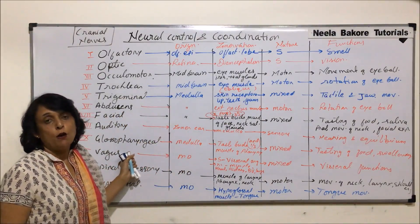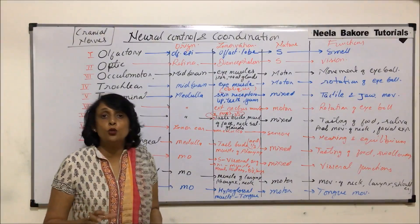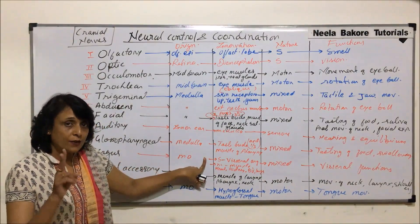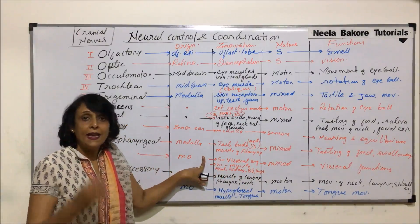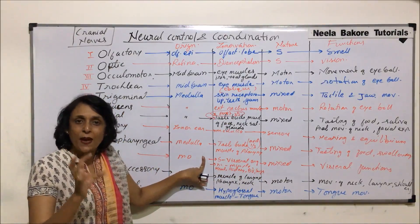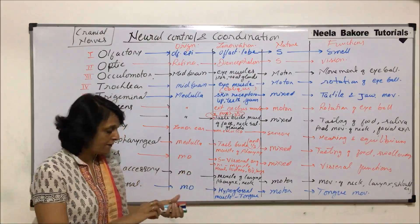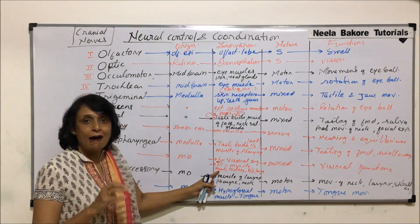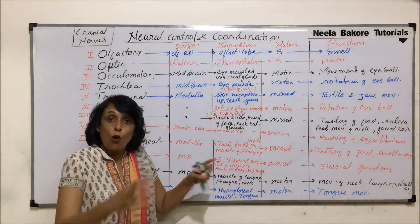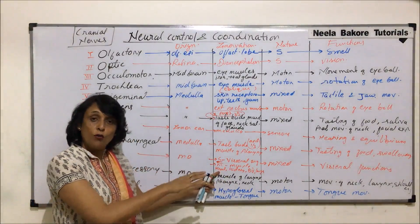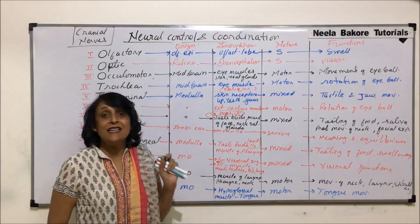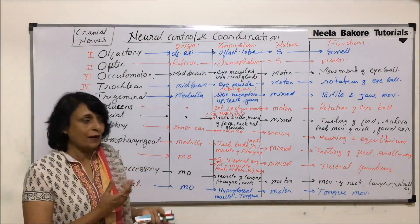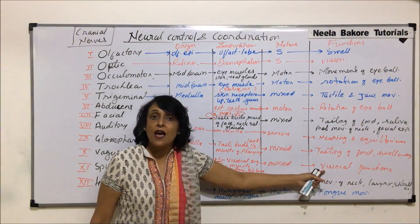Vagus is the only cranial nerve which leaves the skull region and goes to the visceral organs. It arises from the medulla and is a mixed nerve. The sensory part is responsible for perception of pain from all visceral organs. The motor part goes to the muscles of visceral organs — including the heart, lungs, blood vessels, kidneys, and even the external genitalia. All visceral functions are under its control.